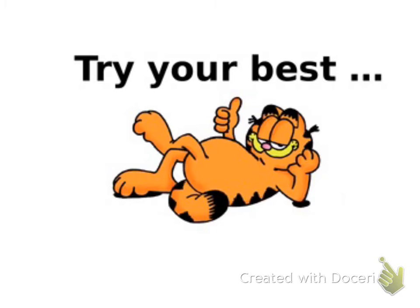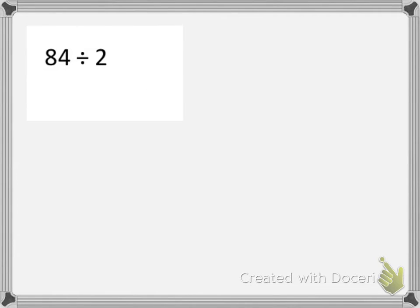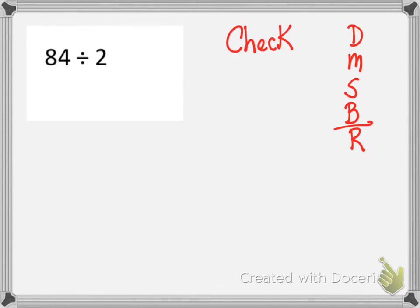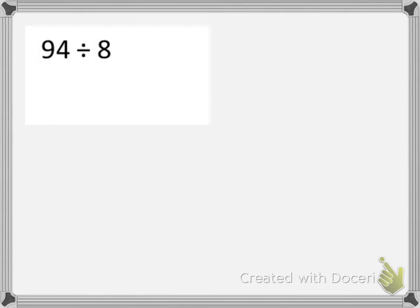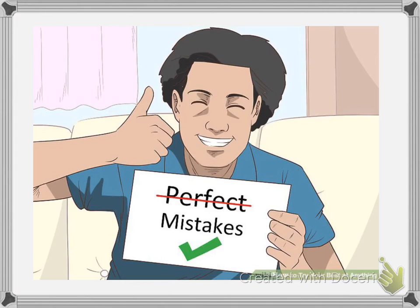As always, try your best. First one: 84 divided by 2 — be sure that you check your answer. Everyone should be able to get 100 tonight because we're checking. Follow the steps: Dad, Mother, Sister, Brother, sometimes Rover. If you need to, go back into the video and look at the examples we used tonight. Next: 79 divided by 5 — make sure you check. Our last one is 94 divided by 8 — please make sure you are checking your answer and using the division steps to help you. Mistakes equal learning, so I'm not looking for perfect — we're going to make mistakes and that's the best thing, because we learn from them. Have a wonderful night, guys. See you next time. Bye!